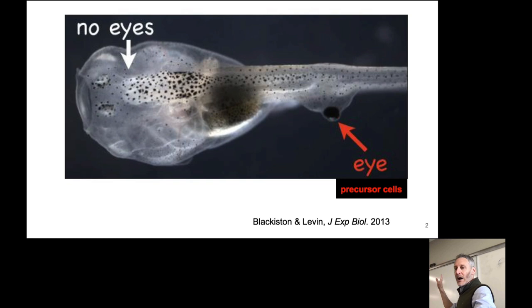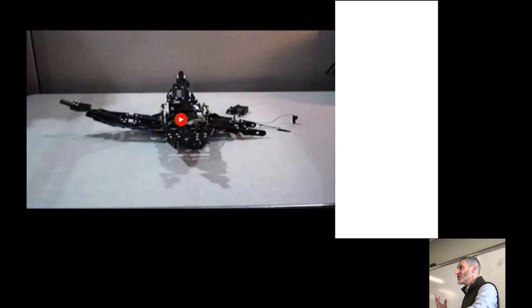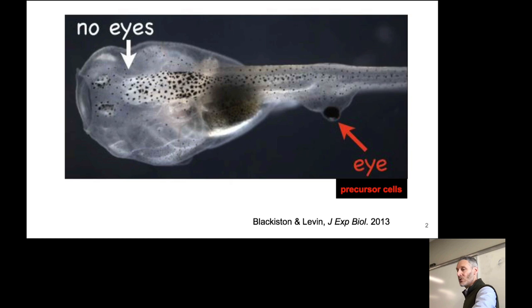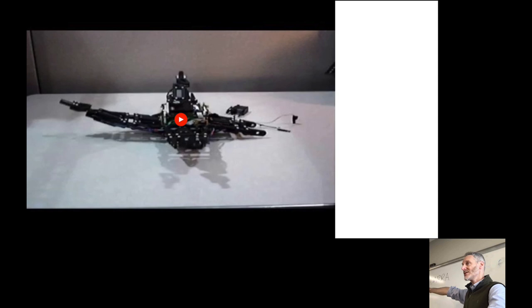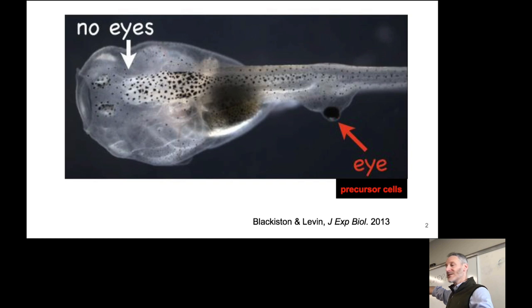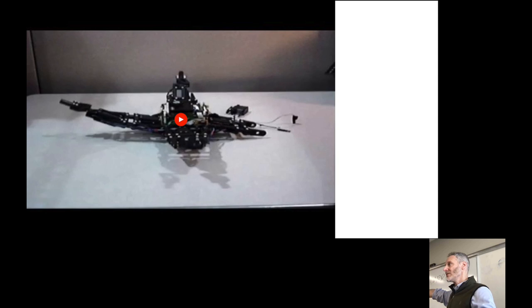Mike Levin's lab was working on how organisms deal with changes to their bodies, and at the same time we were working on machines that could adapt despite changes to their body. We knew about each other's work. Around 2015, we pitched a proposal to DARPA — the research wing of the Department of Defense — to bring these two ideas together: create robots that could learn from how organisms adapt. DARPA funded both labs.